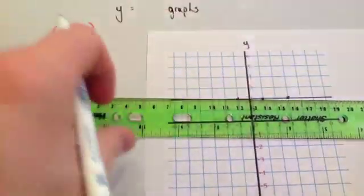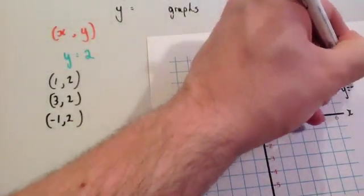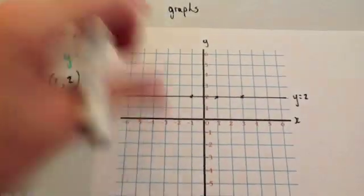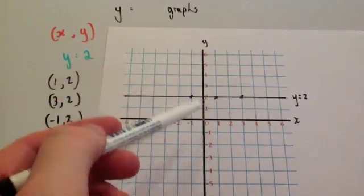So that's the line, y equals 2. Notice that that line, y equals 2, goes through the y-axis at 2.